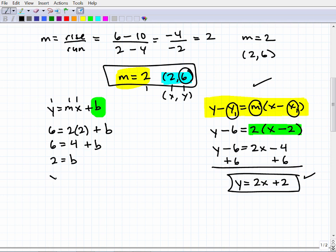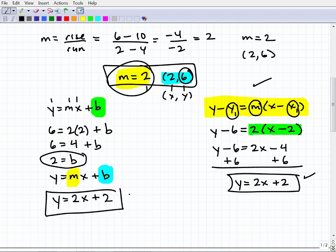So remember, y equals mx plus b. All we need to write this equation is the b and the m. Well, do I have the m? Yes, I already have the m. That's 2. So y equals 2x plus, well, what's b? I solved for it right here, plus 2. And you can see both of these equations are the same.